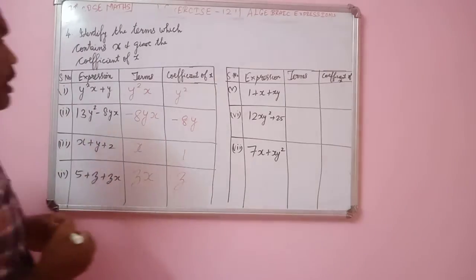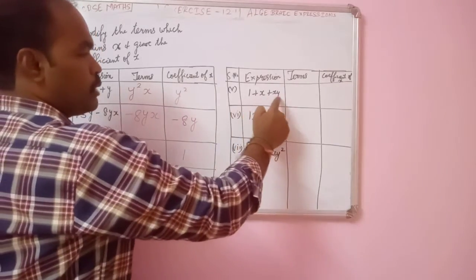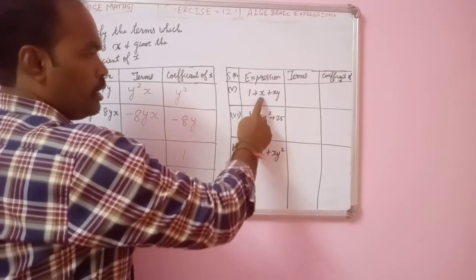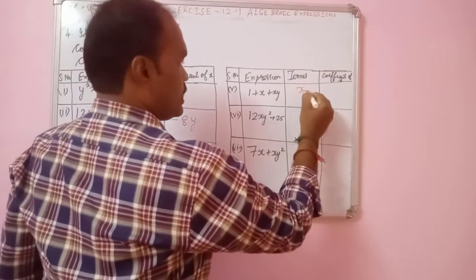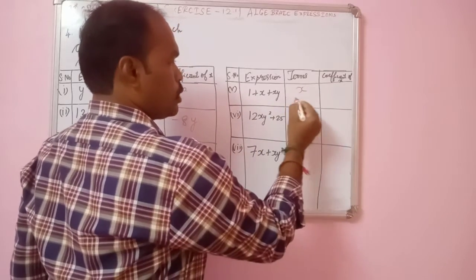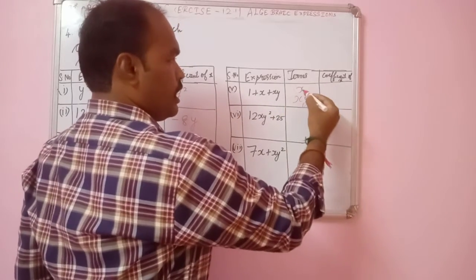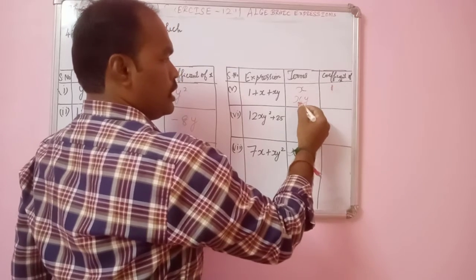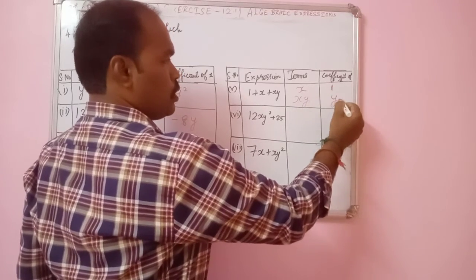Next, for the expression 1 plus x plus xy, the terms which contain x are x and xy. The coefficient of x in xy is y.